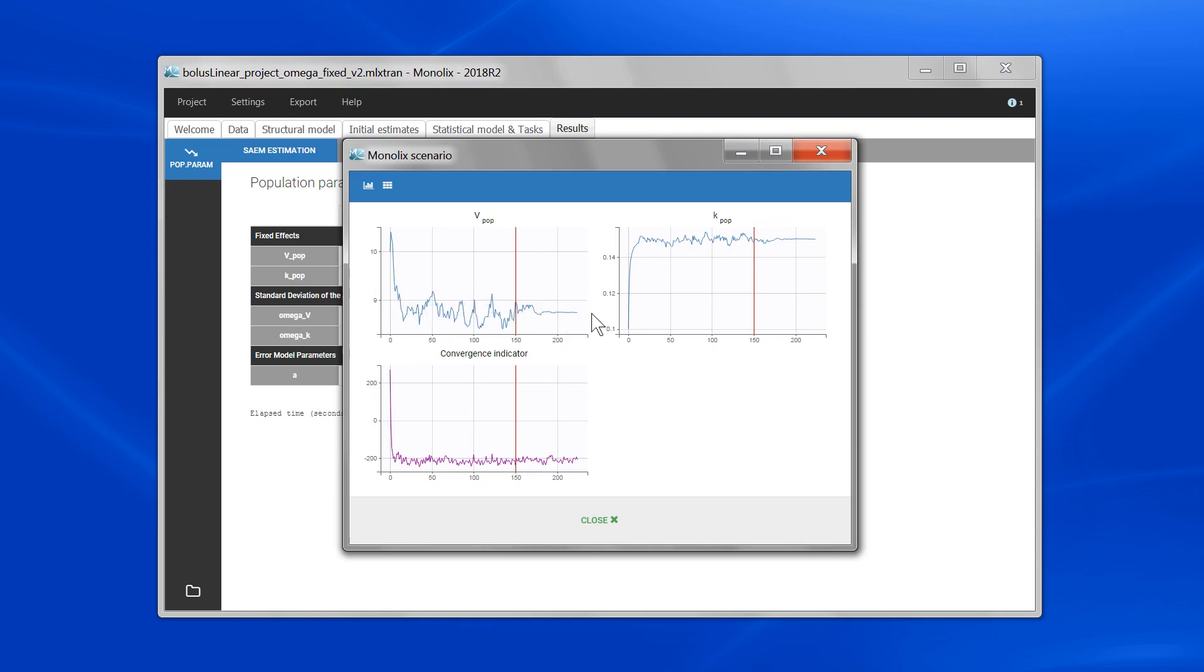During the second phase, called the smoothing, after the red line, we really converge to the maximum likelihood.